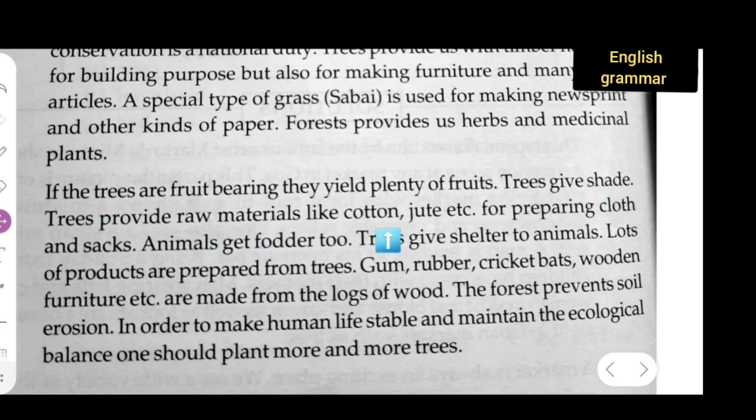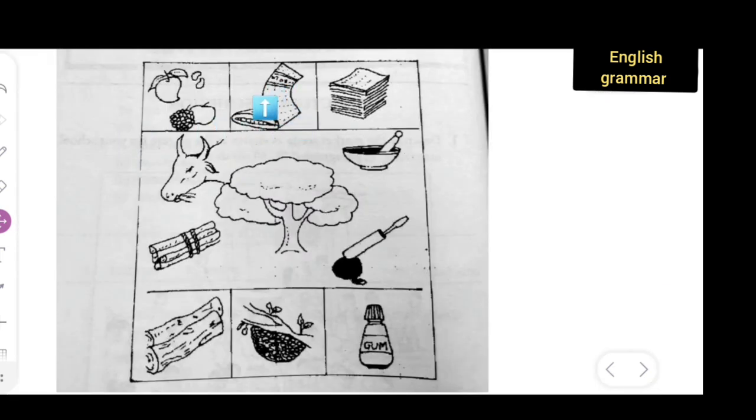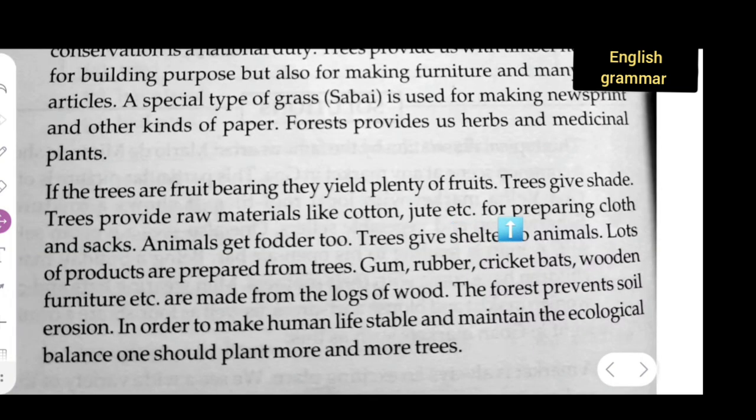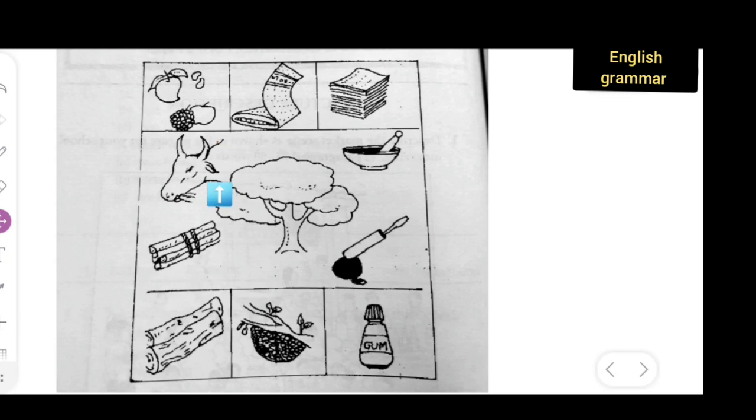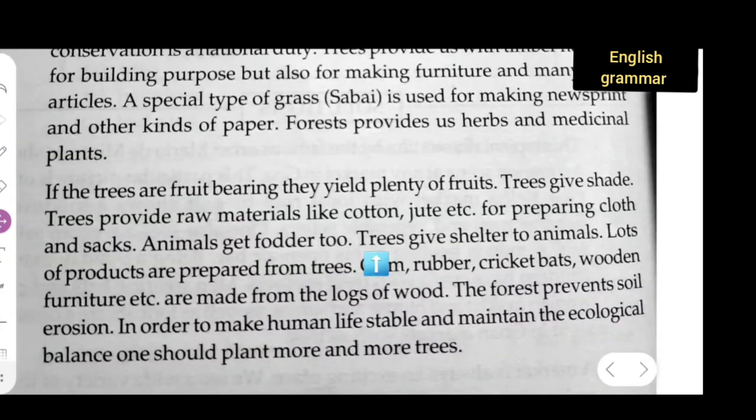Tree provide raw material like cotton, jute, etc. In the picture y'all can see it provides us cotton, jute, such materials for preparing cloth and sack. Animals get fodder too. Here animals, you can see a cow.